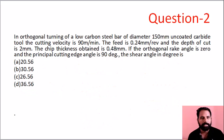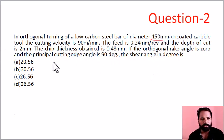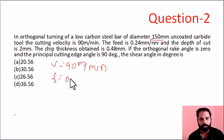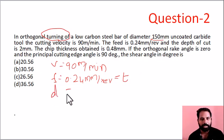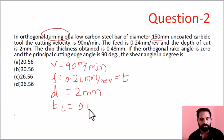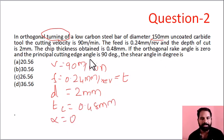The next question involves orthogonal turning. The cutting velocity V is equal to 90 meters per minute, feed is equal to 0.24 mm per revolution, depth of cut is 2 mm, chip thickness Tc is equal to 0.48 mm, and the orthogonal rake angle α is equal to 0 degrees. The principal cutting edge angle is given as 90 degrees.